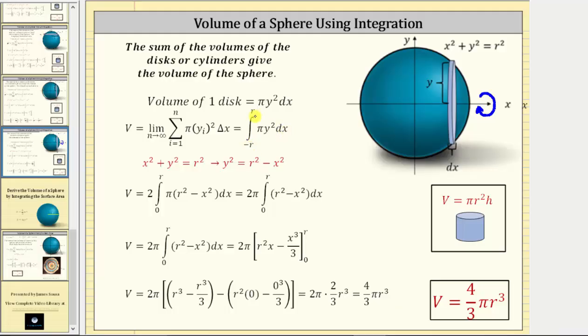Notice here we're integrating from negative r to r all along the x-axis. From here though, let's make two changes. Instead of integrating from negative r to r, let's integrate from zero to r, then multiply the integral by two.